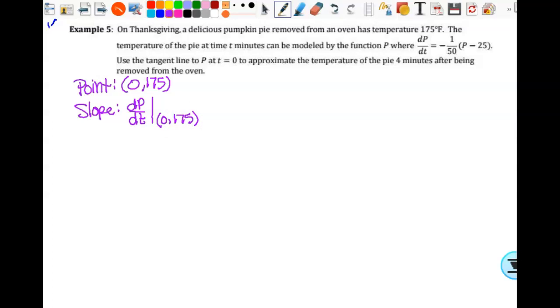So here's my derivative. -1/50 times, what do I substitute in for p? 175. Because it says the temperature of the pie at t minutes can be modeled by the function p. So p is the temperature, t is the time, right? Very common mistake on this question is to substitute in 0 for p. So this is 175 - 25. Now, technically, I can leave this like this, too. Do I really want to do that? Probably not, because that just makes everything kind of weird. What's 175 minus 25? 150. 1/50 times 150. And what does that give me? Negative 3, I think.